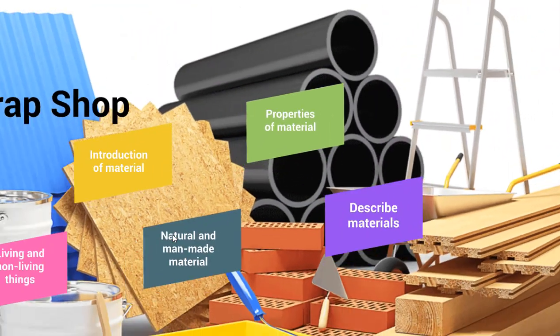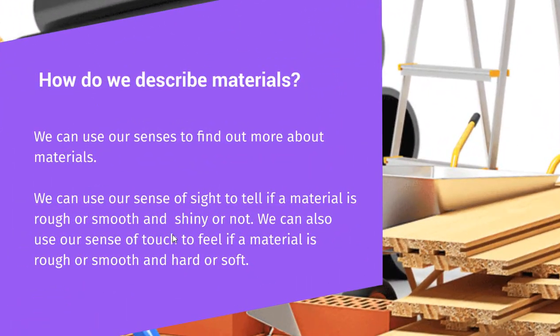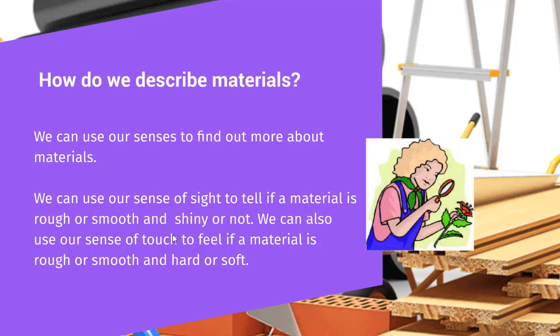Now we will discuss how we describe materials. We can use our senses to find out more about materials. We can use our sense of sight to tell if a material is rough or smooth and shiny or not.